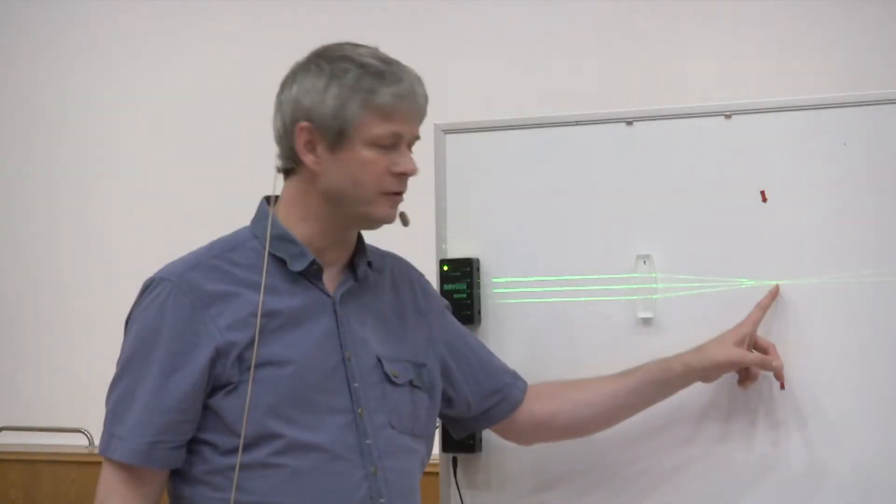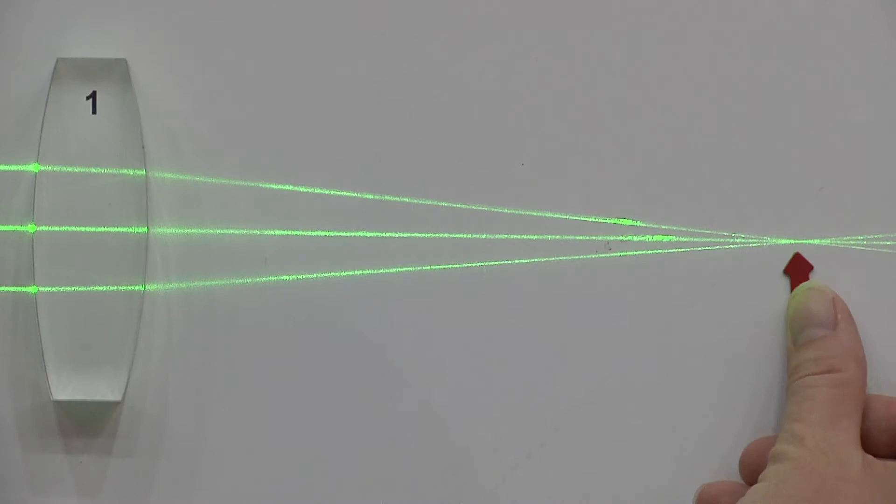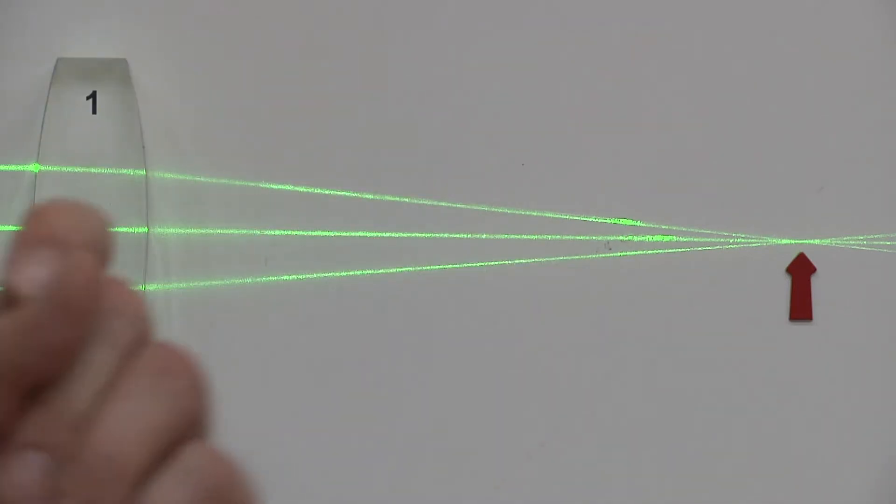What you see is it generates a focus here and I'm going to mark this focus with a little arrow that you can see here. So as it is nicely seen, these two lines cross.